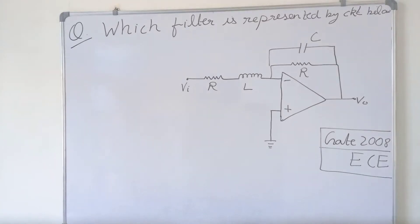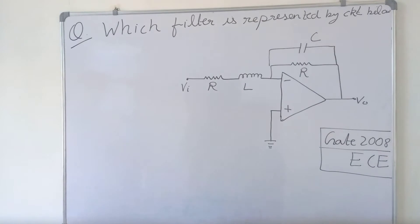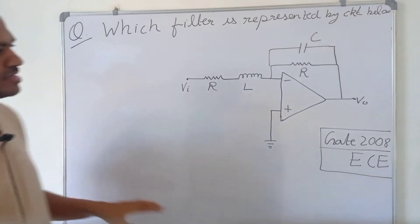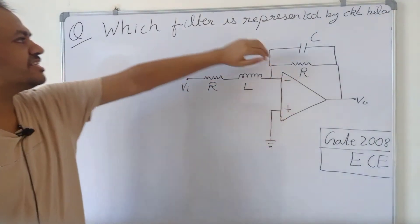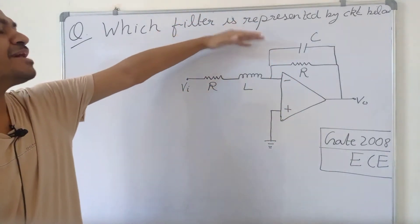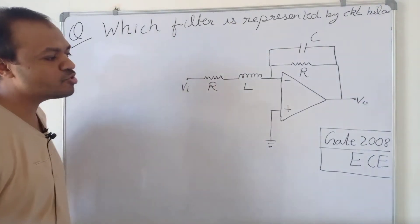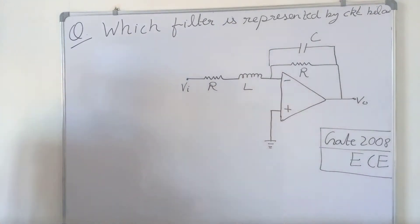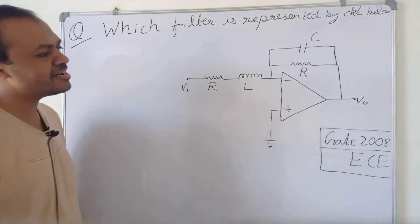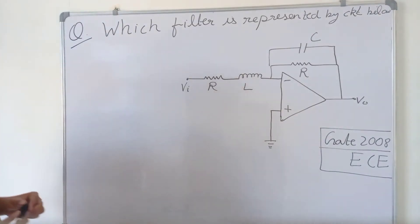Welcome. We are doing questions from the topic of designing filters using op-amp. In this question, it is asked which filter is represented by the circuit below. This question was asked in 2008, and the four options were: low pass filter, band pass filter, band reject filter, or high pass filter.